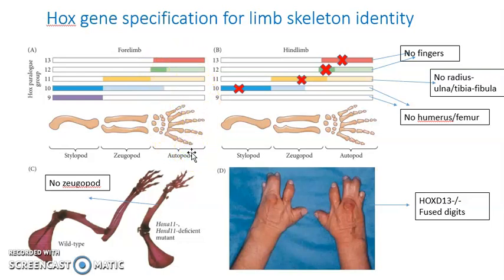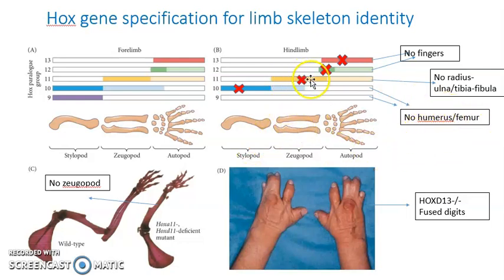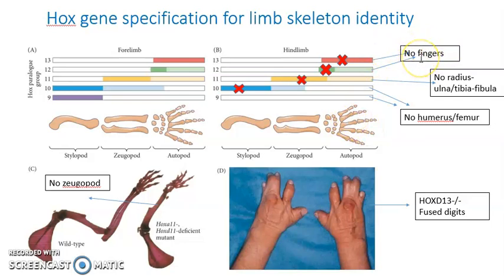Mutations in Hox genes result in different skeletal anomalies. Mutation in Hox 9 and 10 results in loss of the stylopod — there will be no humerus or femur. Mutation in Hox 11 results in loss of the zeugopod — no radius, ulna, tibia, or fibula. Mutation in Hox 12 and 13 results in loss of the autopod — no digits or fingers.